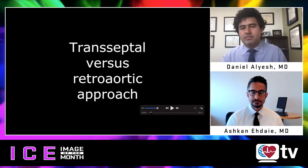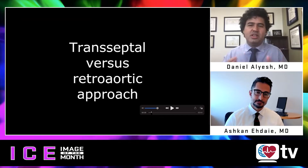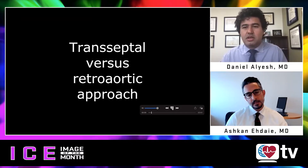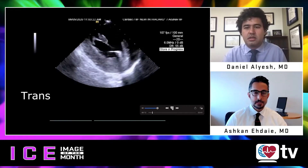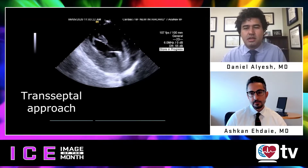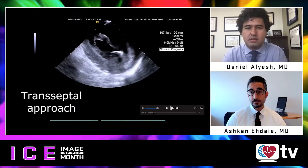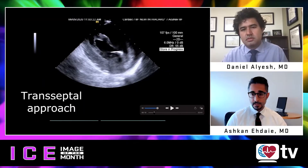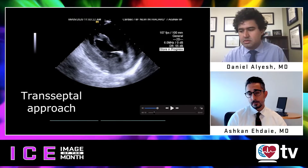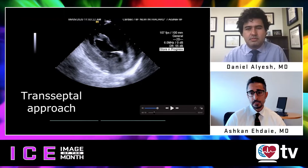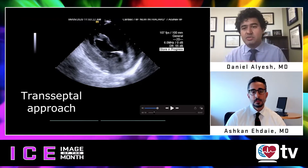One of the great first questions is: when do you decide to do a transeptal access versus a retro-aortic approach for PVCs originating from the papillary apparatus? It depends on what you're used to and comfortable with. Both approaches can access both papillary muscles. There are some advantages to the transeptal approach for the anterolateral papillary muscle — particularly when it takes off relatively anterior and more basal, where you may have difficulty reaching from a retro-aortic approach, especially in a dilated ventricle. I prefer the transeptal approach for the anterolateral papillary muscle, and I actually use transeptal puncture for both as my routine first default.